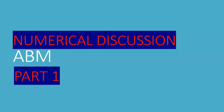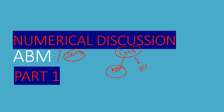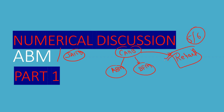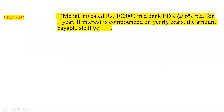This numerical series is important not only for CAP candidates but also for JAB candidates. It is important for ABM and sometimes helpful in BFM and retail as well. Every year in the retail examination, five to six questions from this numerical topic have been asked. Let's start our discussion — the first numerical is now on your screens, a very easy question.